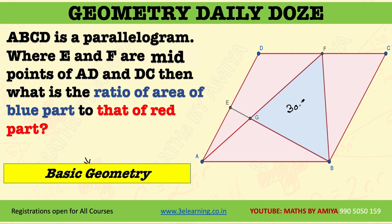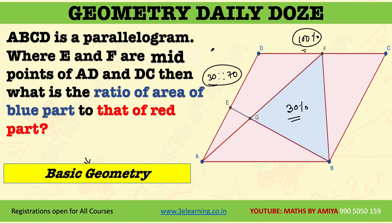The blue part is 30% of the parallelogram. If the parallelogram area is 100%, then the blue part is 30% and the remaining red part is nothing but 70% of the parallelogram. So the ratio is nothing but 3 is to 7.